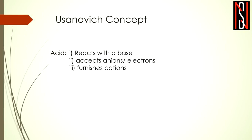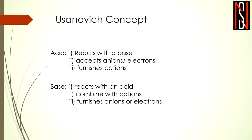As per the Usanovic concept, an acid is any chemical species that can react with a base, or it can accept anions or electrons, or it can furnish cations — meaning removal of cations. So basically, a chemical species which can react with a base — where base means it can donate an electron pair or it has a negative charge — is accepting anions or electrons, or it is donating the positive charge cations or positive charged species.